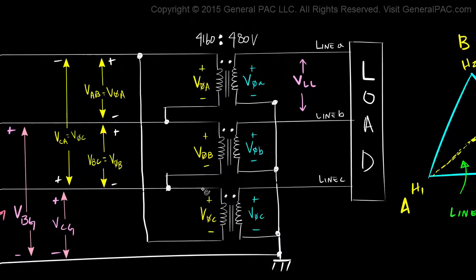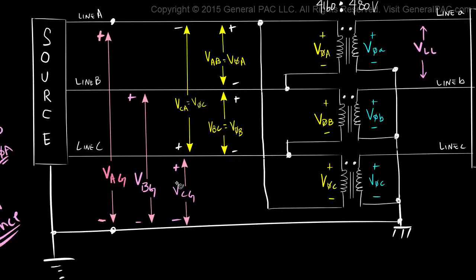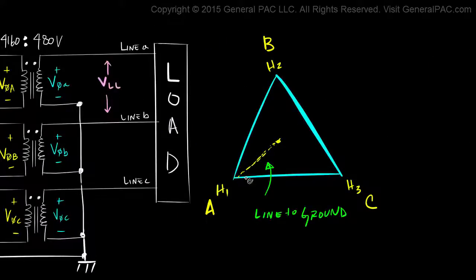Because we have several of them. So we have line to ground voltage VAG which measures the voltage across line A and ground. VBG represents the voltage between line B and ground, and VCG which represents the voltage across line C and ground. Since this dashed line is pointing towards this H1 or this corner of this triangle, this dashed line represents VAG.